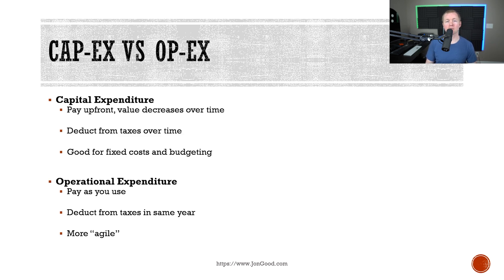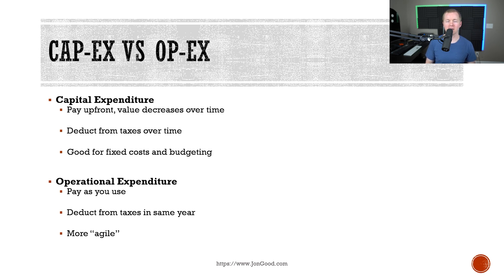Capital expenditure versus operational expenditure. CapEx is the money that you spent up front for your infrastructure, and then its value decreases over time. One of the benefits with capital expenditure is that you can actually deduct those expenses from your taxes over time. Think about things like data center costs, tooling, and personnel costs to install and maintain everything. CapEx is great when you have fixed costs or you really need to budget things out ahead of time. Operational expenditure is where you pay for services or products as you need them, but you can only deduct this from your taxes in that same year. This is where cloud providers are at because you pay for what you need as you go, and operational expenditure is considered agile because you can adjust.